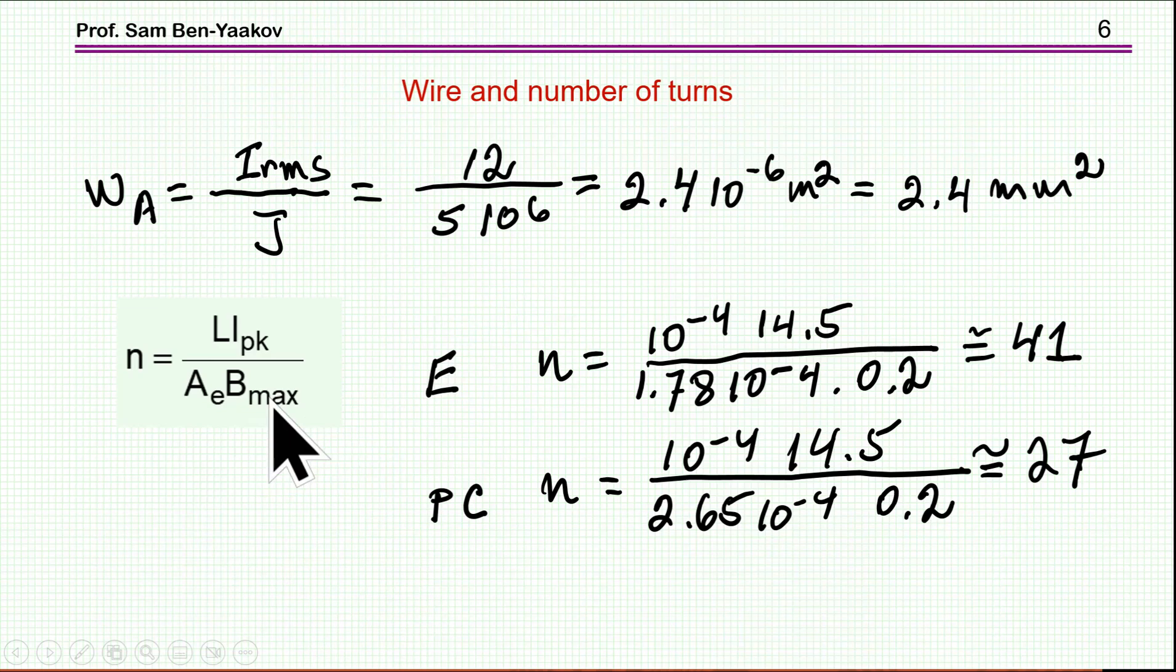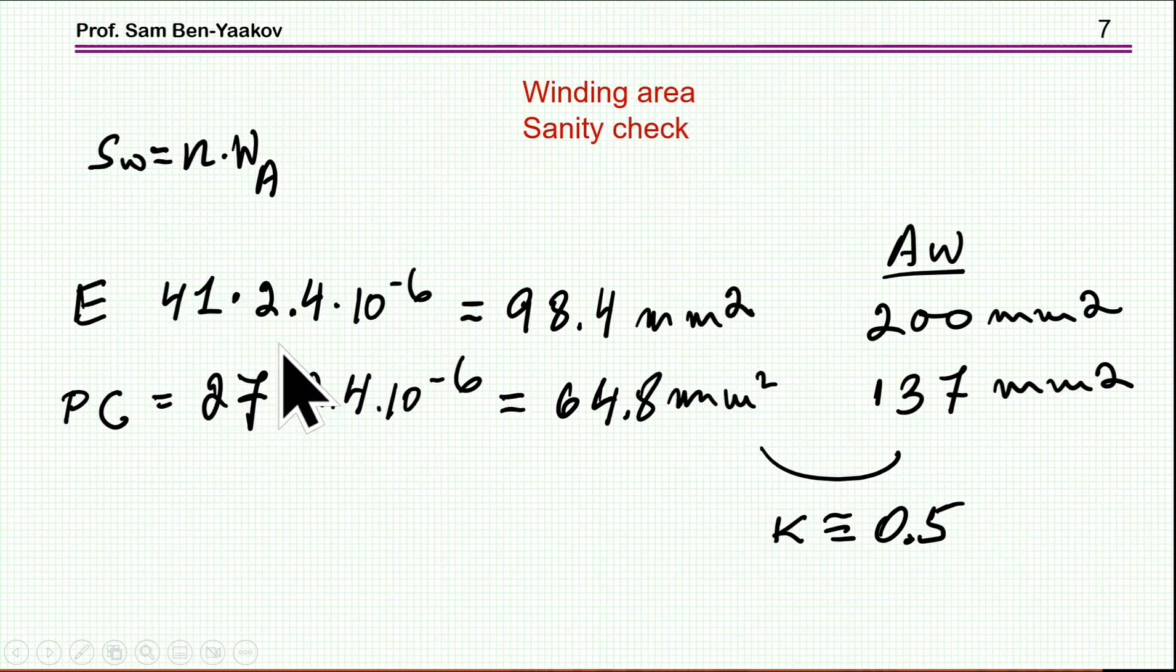Now, it turns out, and you can see it in the reference video, that the number of turns required is L, the inductance times the peak current, over the cross-section area times B max. And if I calculate it for the two cases, I find that for the E-core, I need 41 turns, and for the pot-core, I need 27 turns from this equation. I can go around and have here a sanity check. I know what is the number of turns that I have calculated, so let's see how much area do these wires need, these turns need, per the cross-section area of the wire that I have calculated.